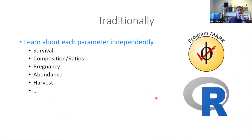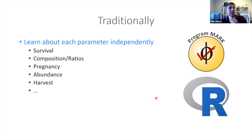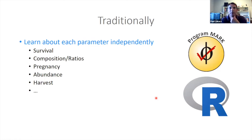Let's think about independent data sets and how they're usually analyzed. Typically if we have survival, pregnancy, abundance, harvest, age composition, we would estimate them all separately — grab your favorite program for each one, maybe program MARK for survival or something in R — and you'd come up with a whole bunch of different estimates, each with their own confidence intervals, and then you'd just try to piece it together.